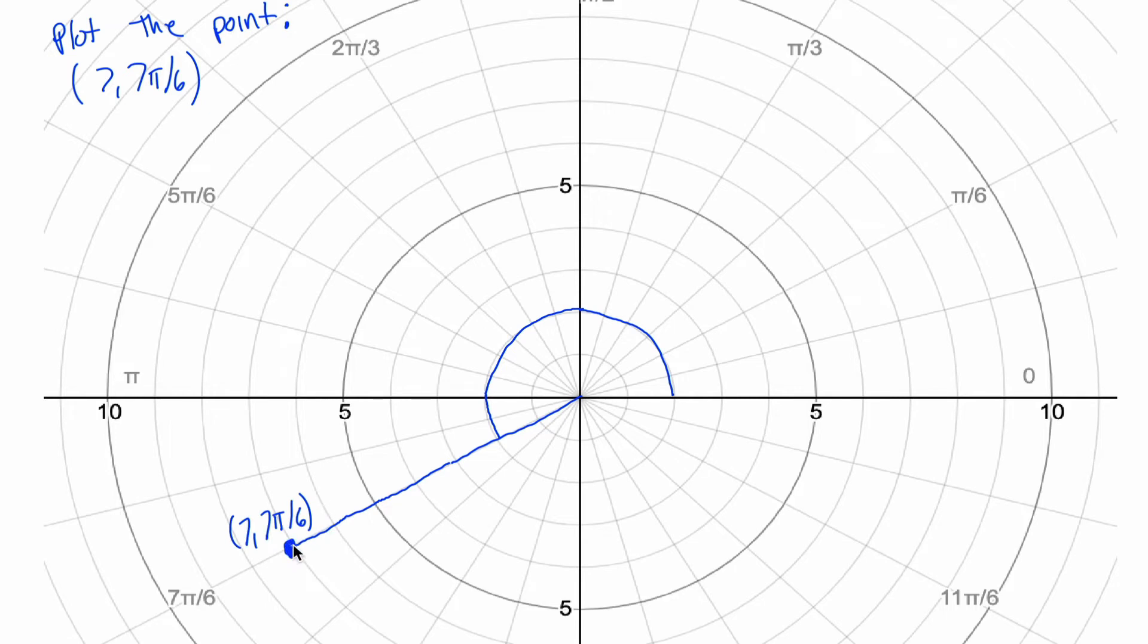The point 7 comma 7 pi over 6 lies right here. If we really wanted to, we could refer to this point in terms of its x and y coordinates. We just have to figure out how far left and right it is to figure out our x coordinate. It appears to be like negative 6 point something, and how far up and down it is to figure out its y coordinate. It appears to be somewhere between 3 and 4. I don't know, maybe 3 and a half or so. But we don't care about the x and the y coordinate because those are its rectangular or Cartesian coordinates. We care about its polar coordinates. And the point with these polar coordinates would lie right here.